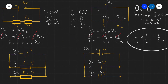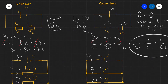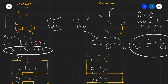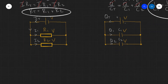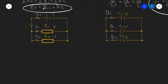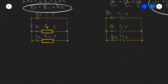So those are the two rules for resistors in series and capacitors in series. Let's now derive the corresponding rules for resistors in parallel and capacitors in parallel. Starting with resistors in parallel, we have a circuit with two resistors of resistance R1 and R2 connected in parallel.